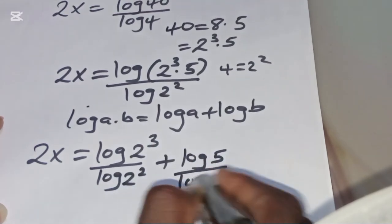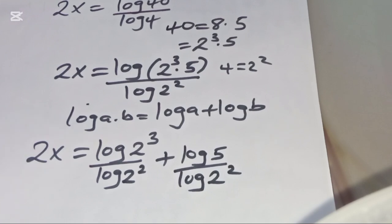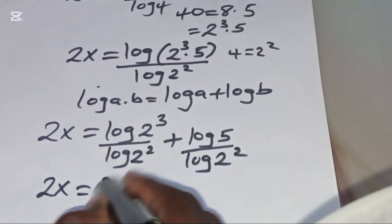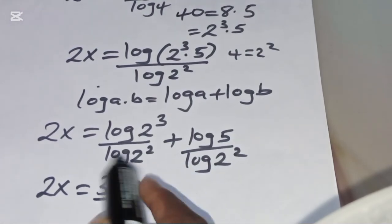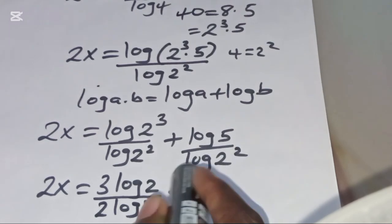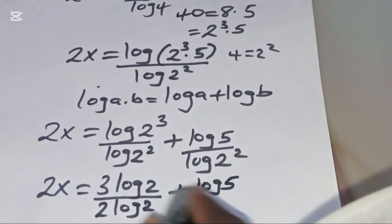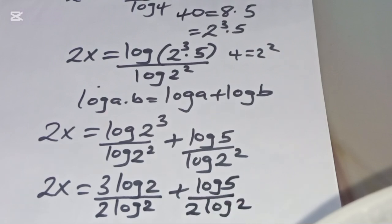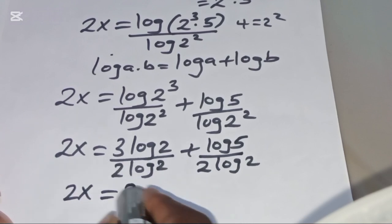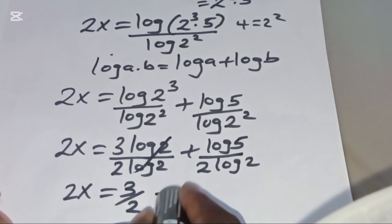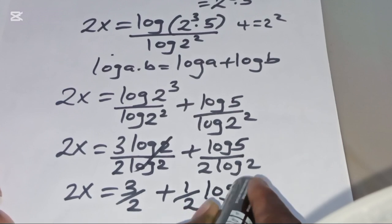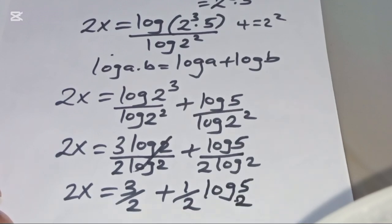Applying the power-log property, log(2³) becomes 3·log(2) and log(2²) becomes 2·log(2). So we have 2x = 3·log(2) / (2·log(2)) + log(5) / (2·log(2)). The log(2) terms cancel, giving 2x = 3/2 + (1/2)·log₂(5).